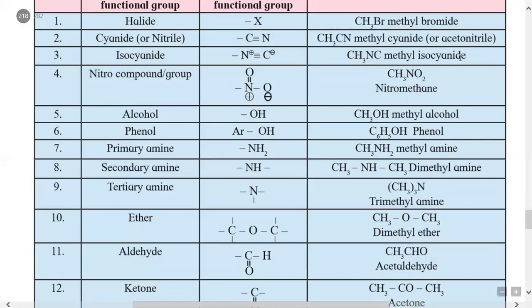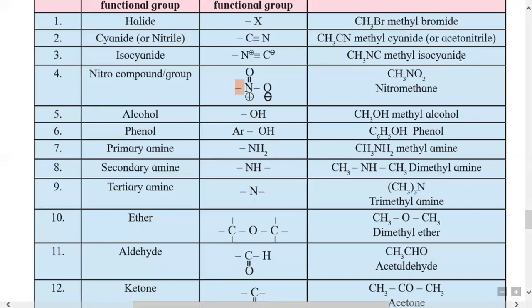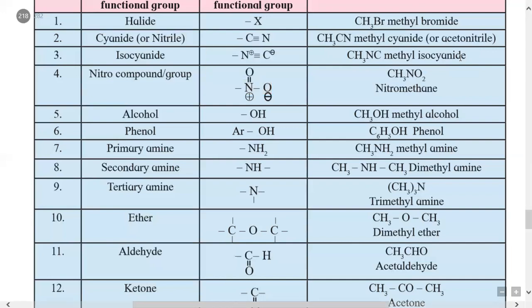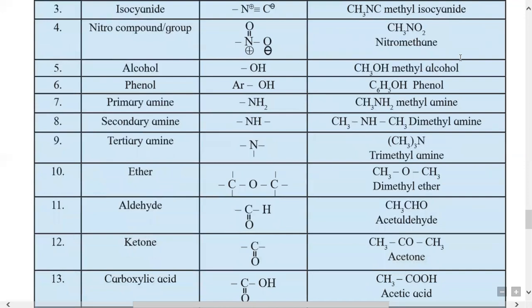The fourth type is a nitro compound. The structure of the nitro group is dash N double bond O single bond O, where nitrogen has a positive charge and one oxygen has a negative charge. Example: CH3NO2 is nitromethane. Replacing CH3 with C2H5 gives nitroethane.